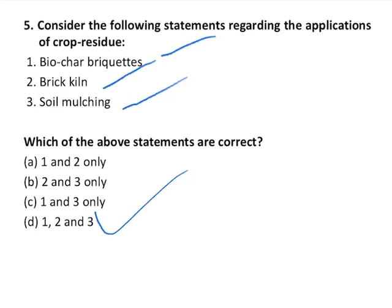Value addition: crop residues are primarily used as bedding material for animals, livestock feed, soil mulching, biogas generation, biomanure, biocompost, mushroom cultivation, biomass energy production, fuel for domestic and industrial use, crop residue-based biochar briquettes in local industry, brick kilns, and also in hotels as an alternative fuel.